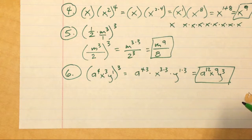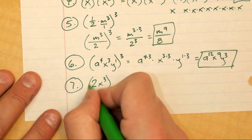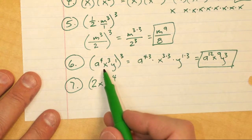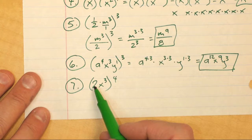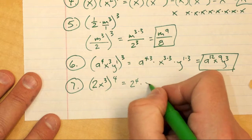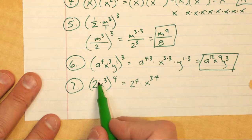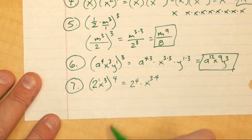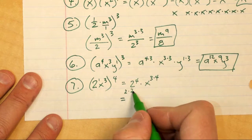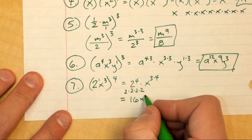Number seven: I have two x cubed raised to the fourth power. Same idea, except I've got a coefficient in front. Whenever you have a coefficient, everything in the parentheses is raised to the power of four. So it's two to the fourth power times x to the third to the fourth power. Keep in mind this two has an imaginary one, so one times four gets me four — that's how I got two to the fourth. Two to the fourth is sixteen, and x to the third times four gives me x to the twelfth. So the answer is sixteen x to the twelfth.